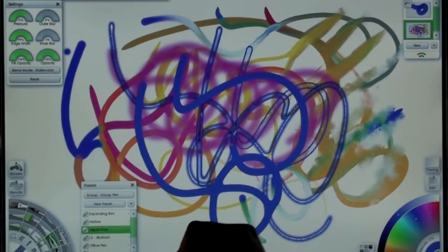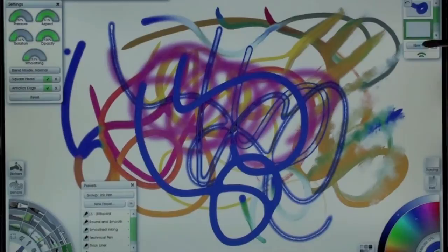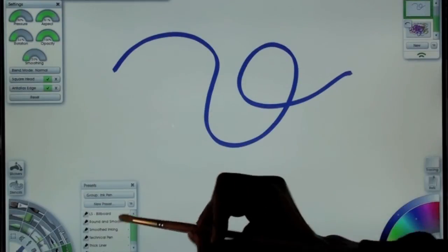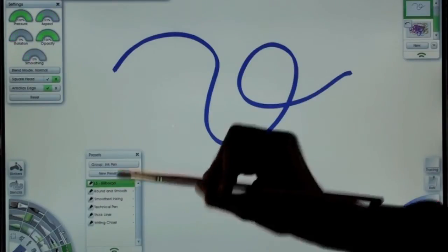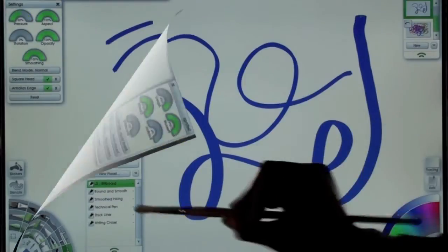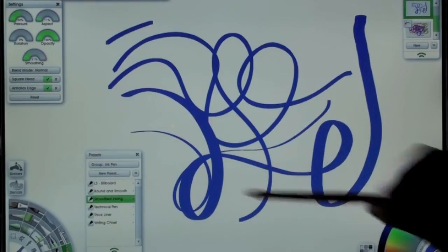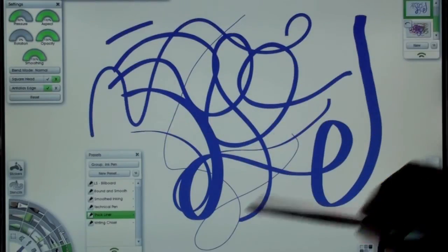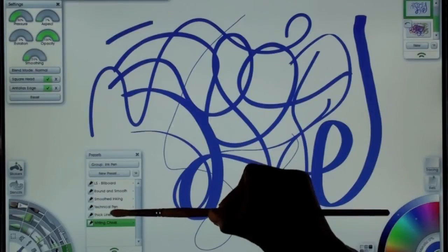And another new tool that we have is the ink tool. So let me get a new layer. And make this layer invisible. Now I'll start on this layer with the ink pen tool. So as you can see, I have some presets here, which I'll want to use. So let's take a look at these in depth. So here's the large size billboard pen. And here's a round and smooth pen. And smooth inking. And technical pen. And a thick liner pen. And a writing chisel.